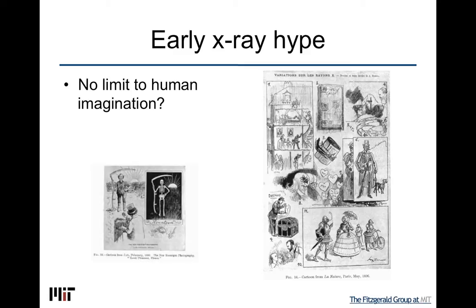X-rays were discovered in late 1895, and then they became very well known in 1896, because people were immensely fascinated with them. The very first publication contained a photo — an x-ray photo of a hand — where you can see the bones inside the hand. And this thought that you would see the bones before death was absolutely fascinating at the time. The cartoon on the left here is really a case in point, where somebody is supposedly taking an x-ray photo, although it looks like just a very normal photographer of a farmer.